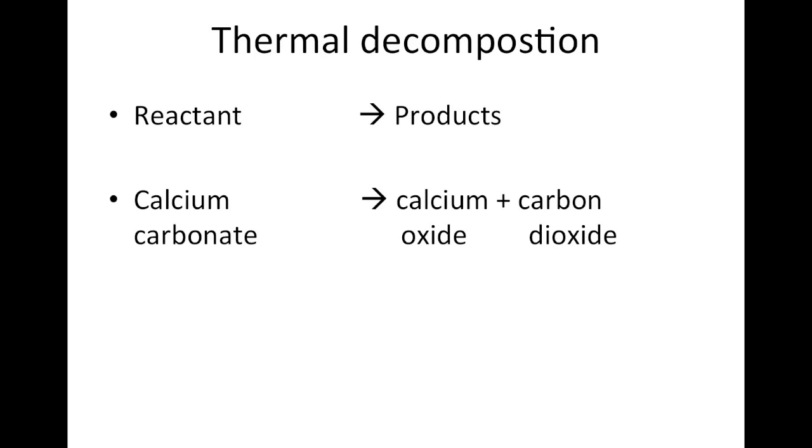That's the word equation. Let's have a look at a symbol equation. CaCO3, S for solid, reacts to produce calcium oxide, also a solid, and carbon dioxide gas. I can represent that visually as well. You can see the atoms there in calcium carbonate. Single calcium atom, single carbon atom, three red oxygen atoms. Look what happens at the end of the reaction. We've got a calcium atom joined to a single oxygen atom, and the other two oxygen atoms are joined up to a black carbon atom.